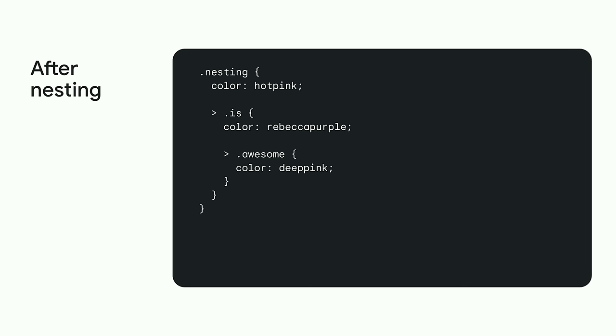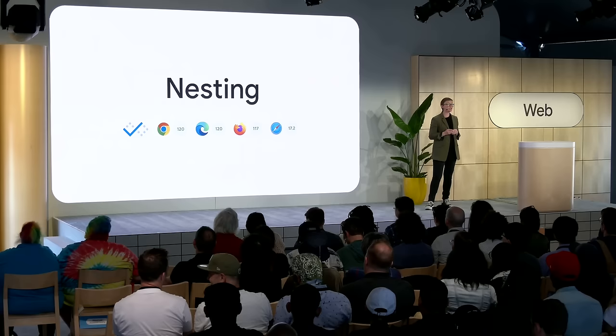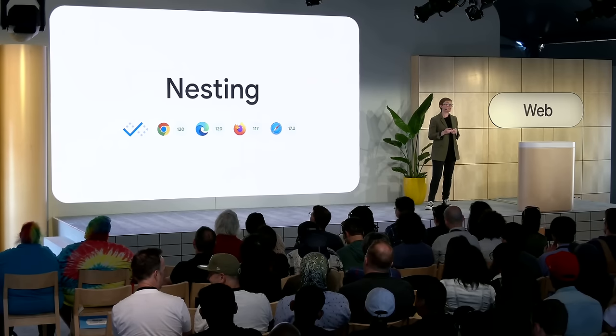With nesting, we group the style rules so it's very clear when you look at the CSS that these things belong together. Nesting was a really popular feature of preprocessors, and once it became part of a CSS specification it made its way pretty quickly through the CSS working group and landed in all browsers in 2023. It became Baseline newly available in August 2023, and it's also part of Interop 2024 to make sure some small remaining issues across browsers are completely fixed. CSS nesting will become widely available in February 2026.